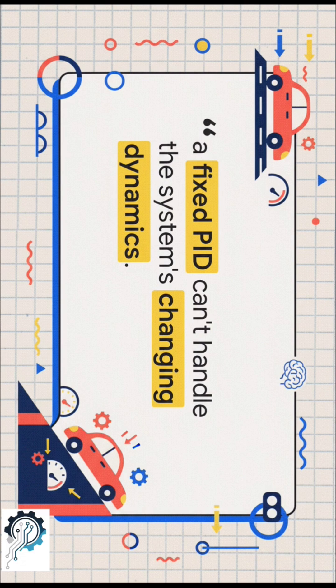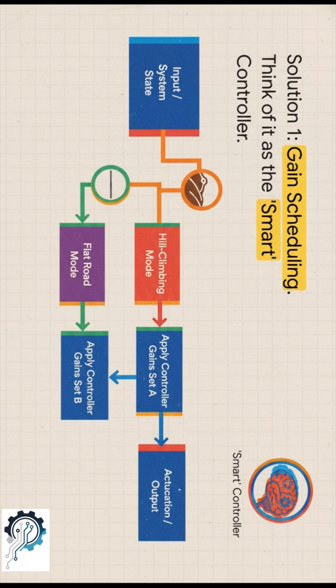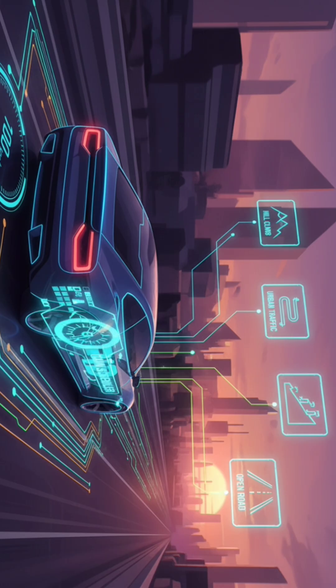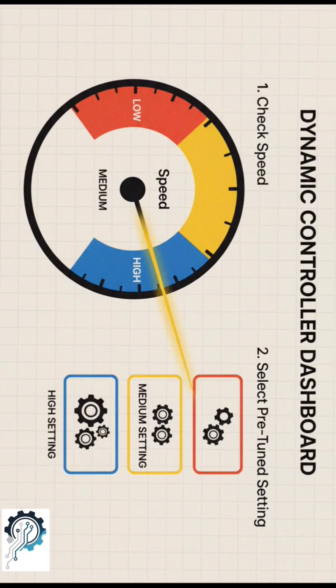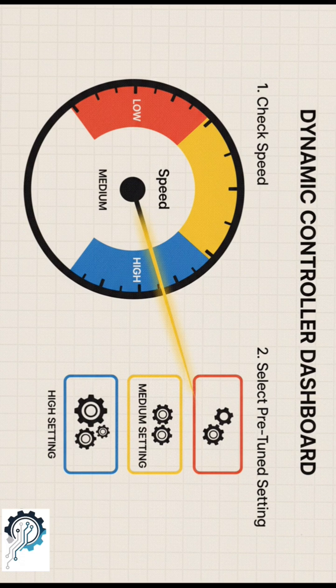So, what's the fix? Solution one is something called gain scheduling. Let's call this the smart controller. Here's how it works: Engineers map out different speed ranges and tune the system for each one. So as your speed changes, the controller just looks up the best settings from its schedule. Smart!